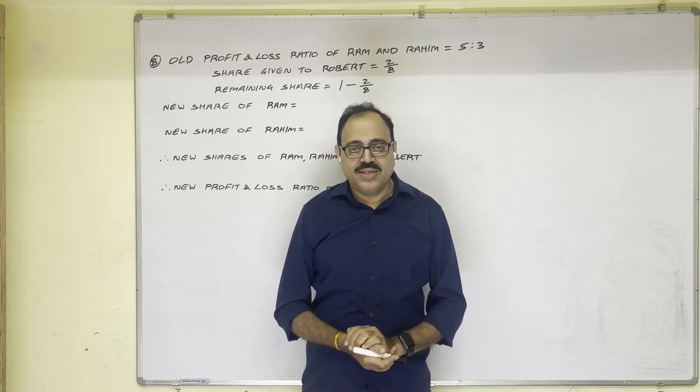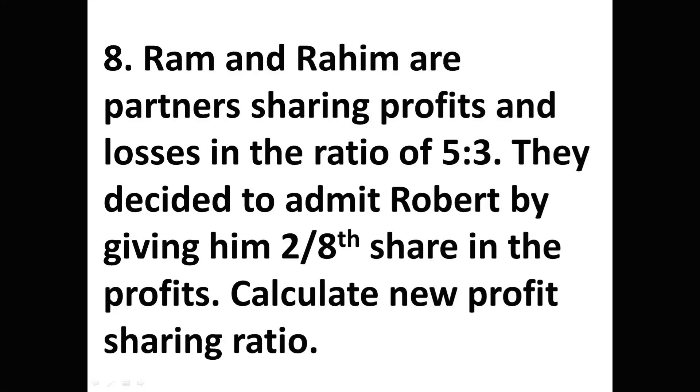Let us see the question first. Ram and Rahim are partners sharing profits and losses in the ratio of 5 to 3. They decided to admit Robert by giving him 2/8th share in the profits. Calculate new profit sharing ratio. This is the question.